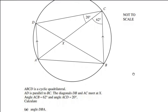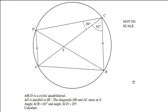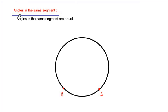We have to calculate the first angle, which is angle DBA. To find this angle, let us use a circle theorem: angles in the same segment. I have drawn a circle with two points A and B. These two points divide the circle into two segments — the smaller one is called the minor segment and the larger part is called the major segment.